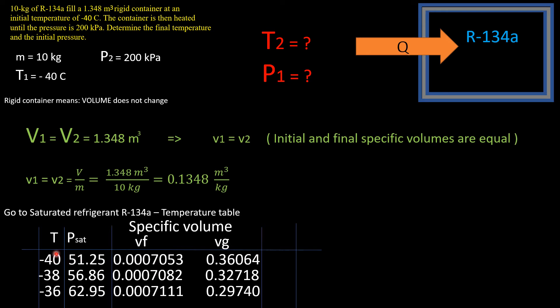We have the specific volume that we just calculated, so we're going to take this value and come to the specific volume column. We have two numbers: vf and vg. This is liquid, this is gas. Our specific volume is right between them. That means our refrigerant is in transition going from the liquid state to the gas state, which means it's a mixture.